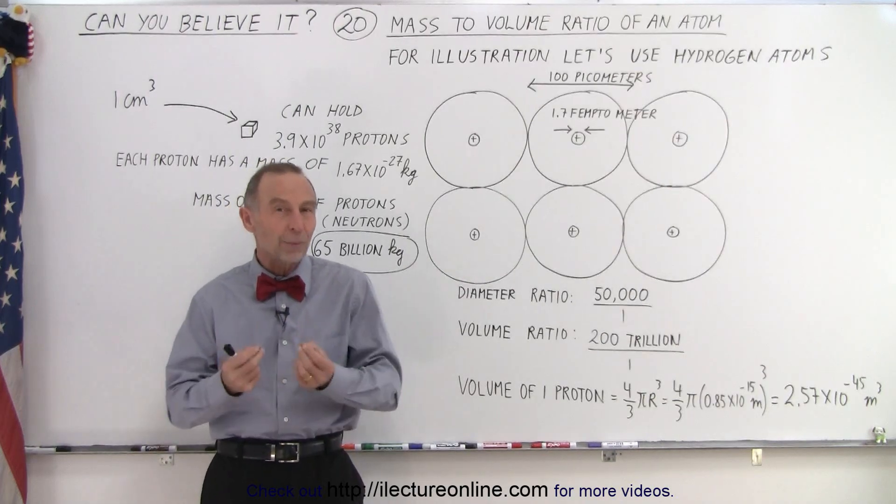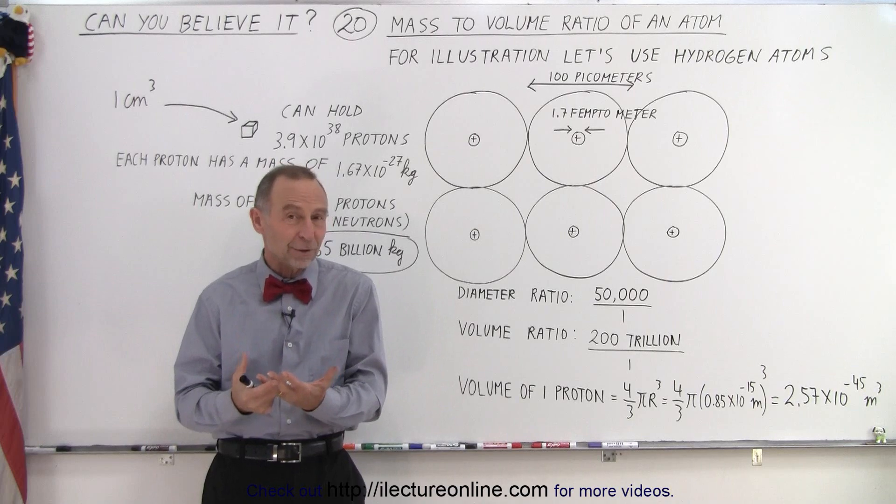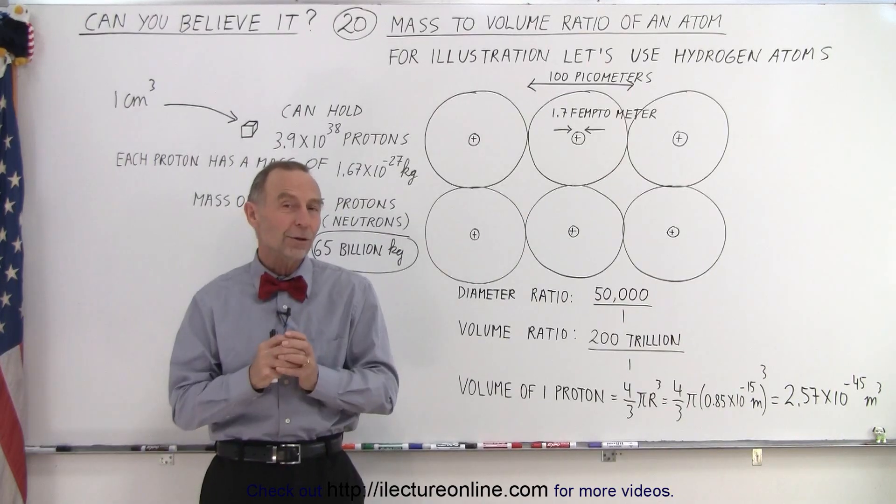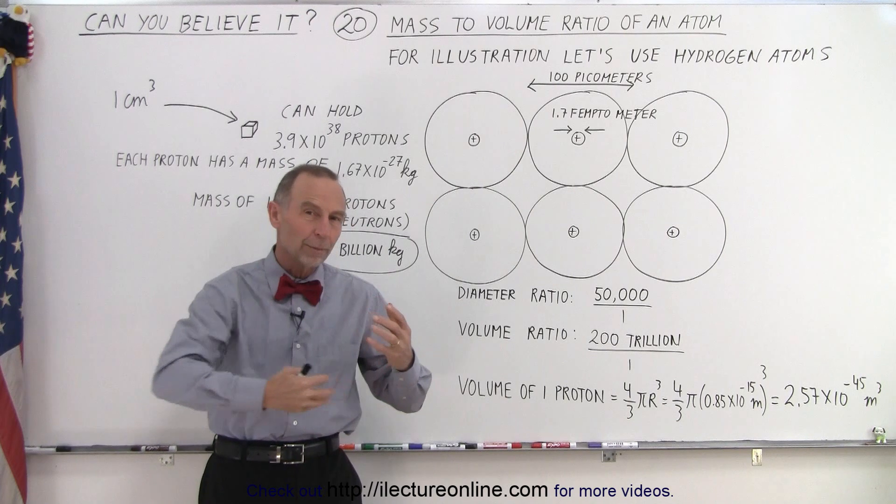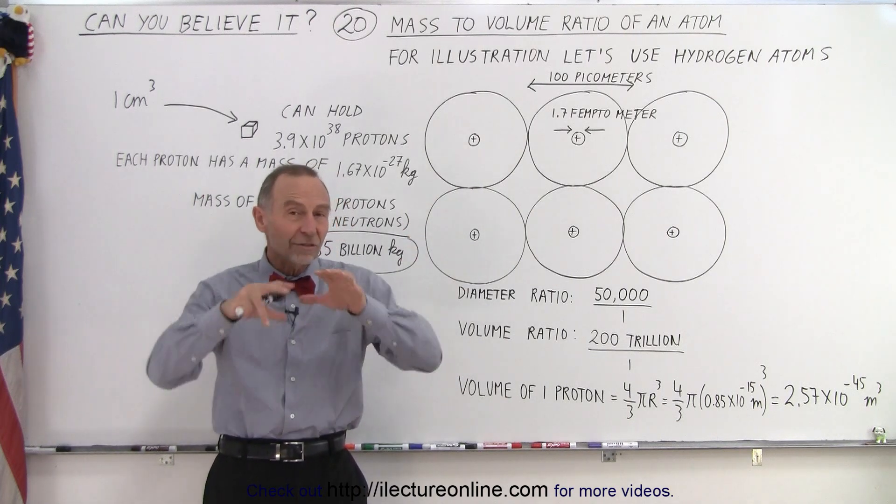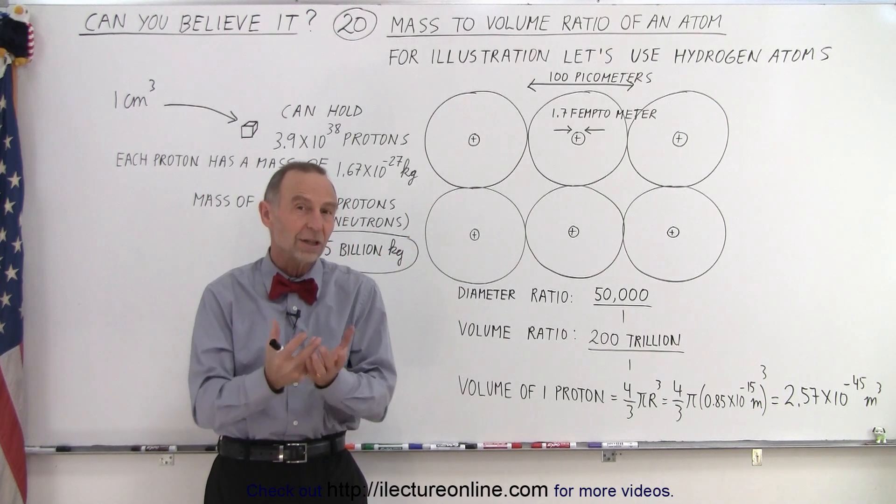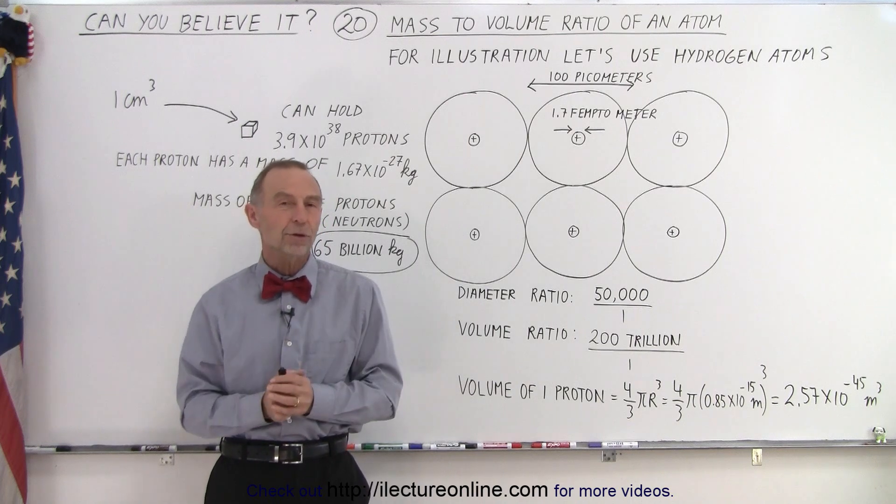Now to make things simple, we're going to look at hydrogen atoms because hydrogen atoms simply have one proton in the nucleus and one electron forming the orbits around the nucleus, which essentially forms the shell of the atom.